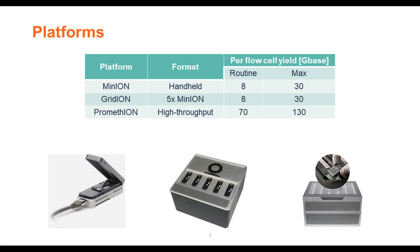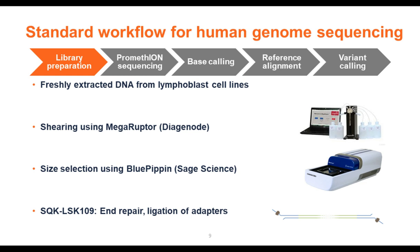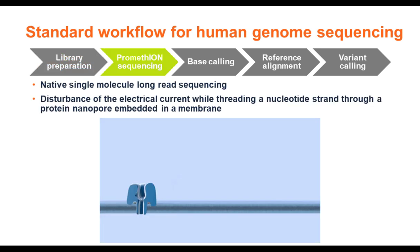Nanopore sequencing — sequencing oligonucleotides through nanoprotein nanopores — is not a new idea, but it was only released five years ago with the Minion sequencer. We mostly use the Promethion sequencer, the biggest machine, which enables high-throughput human whole-genome sequencing not possible on the Minion and GridION flow cells. Nucleotides are threaded to a protein nanopore; long single molecules are sequenced by measuring the disturbance in electrical current when a nucleotide passes through the pore. The speed of sequencing is controlled by a motor protein at 450 nucleotides per second.